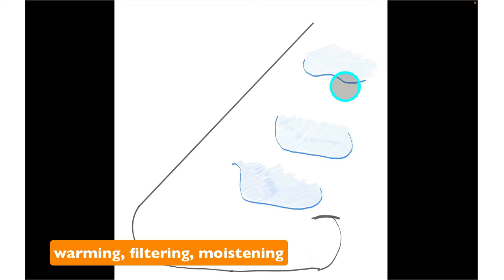We want warm, moist air arriving at the alveoli — we don't want the alveoli to be cold or drying out. Filtering is also super important because the respiratory system is a prime means for pathogens to enter the body. The nasal cavity is one of the first places foreign debris or pathogens are encountered, and there are mechanisms to help prevent these particles and bacteria from proceeding further into the respiratory tract.